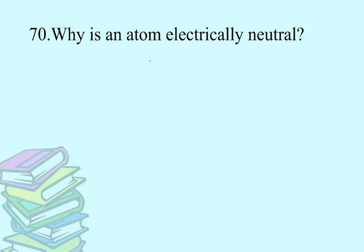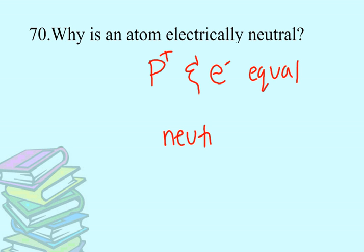Well, an atom is neutral because the protons and the electrons are equal, or the number of protons and electrons are equal. So, when the number of protons and electrons are equal, you get a neutral atom.